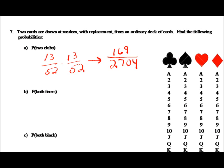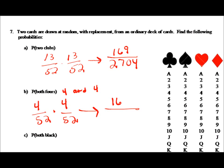The probability that both cards are fours: the probability of the first four is four out of fifty-two, and the second four is four out of fifty-two. Using the counting principle, that's sixteen out of twenty-seven hundred four — about half a percent, maybe six tenths of a percent. So it's not very likely that you pull two fours from the deck.